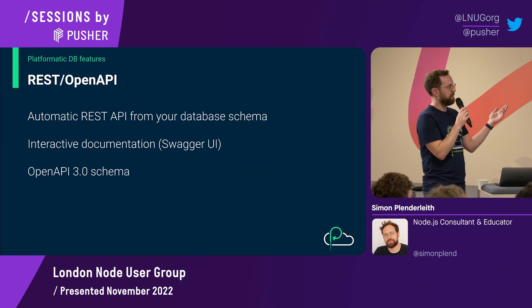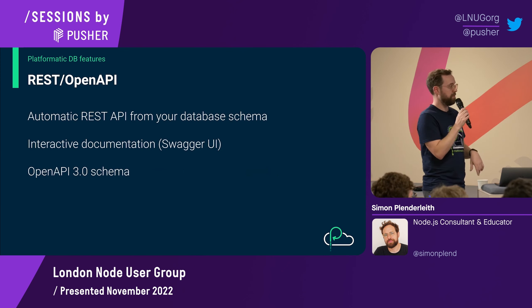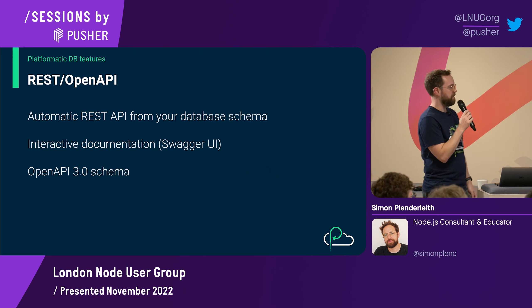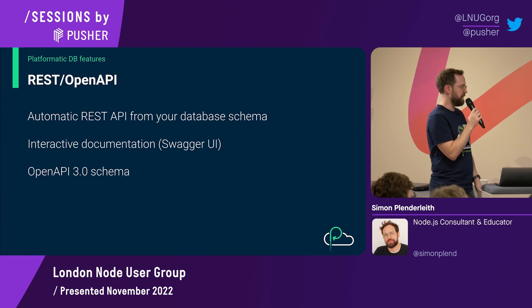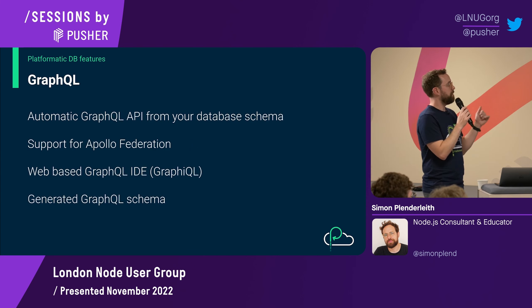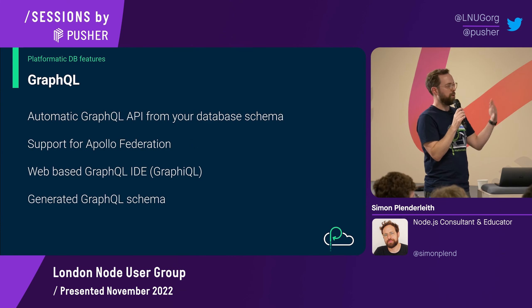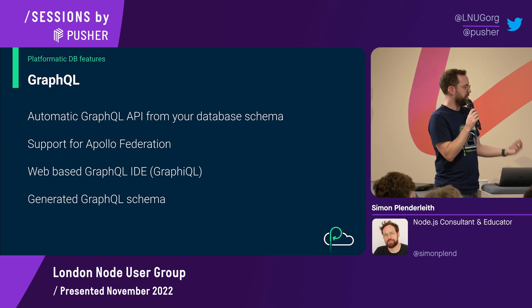On the REST side of things, you get an automatic REST API mapped for you. You also get interactive documentation using Swagger UI, which is powered by an OpenAPI 3 schema compatible with lots of different tooling — for testing, documentation, and so on. On the GraphQL side, you get an automatic GraphQL API supporting things you'd hope for like Apollo Federation. Graphical is also built in so you can work with that in development, and there's a full generated GraphQL schema.